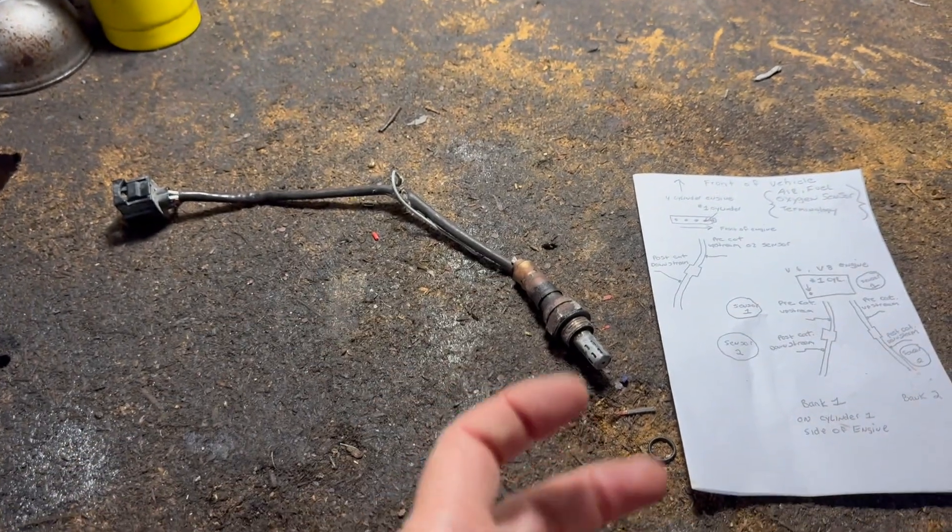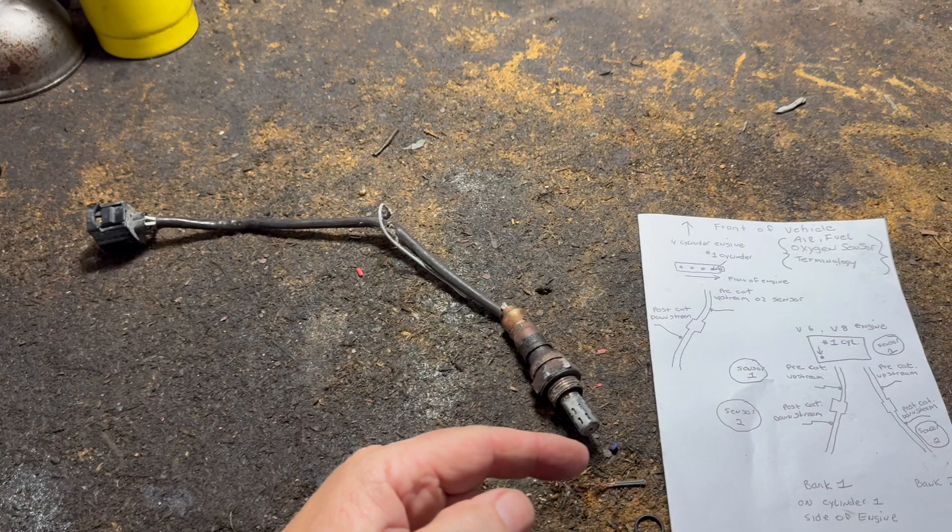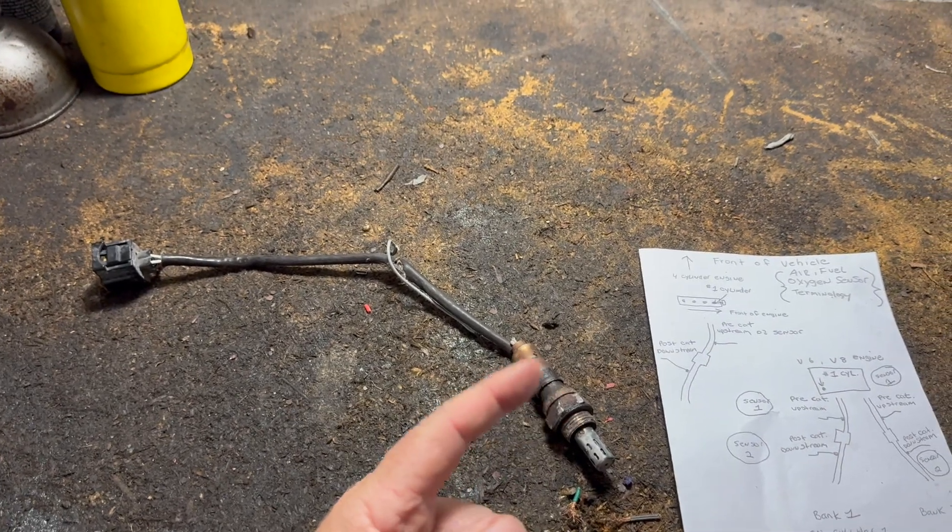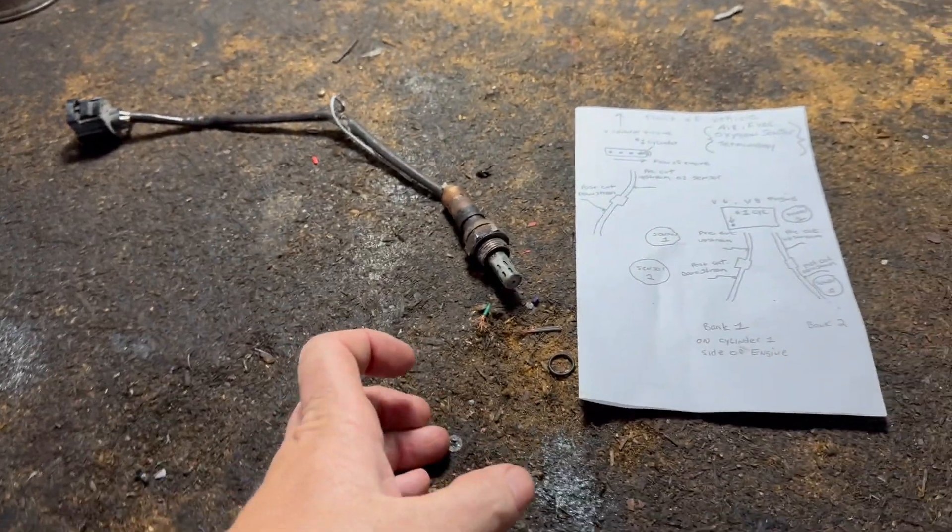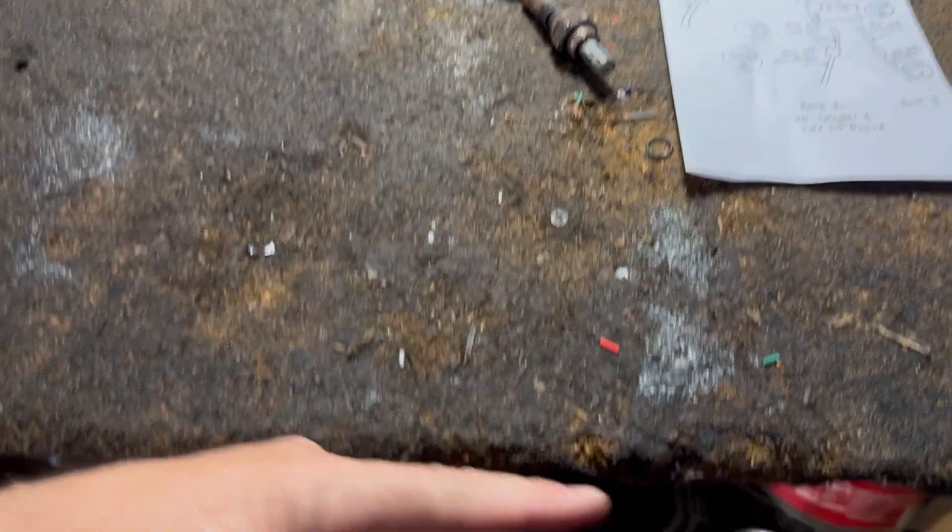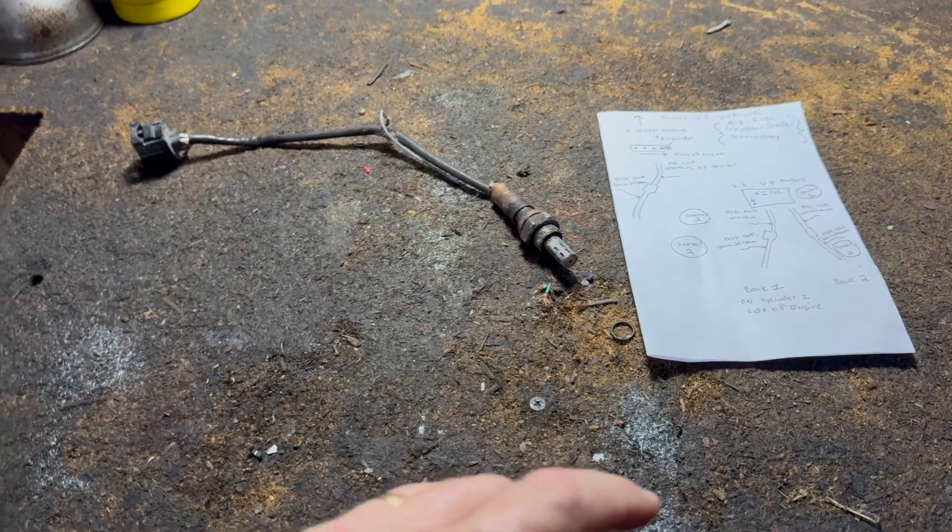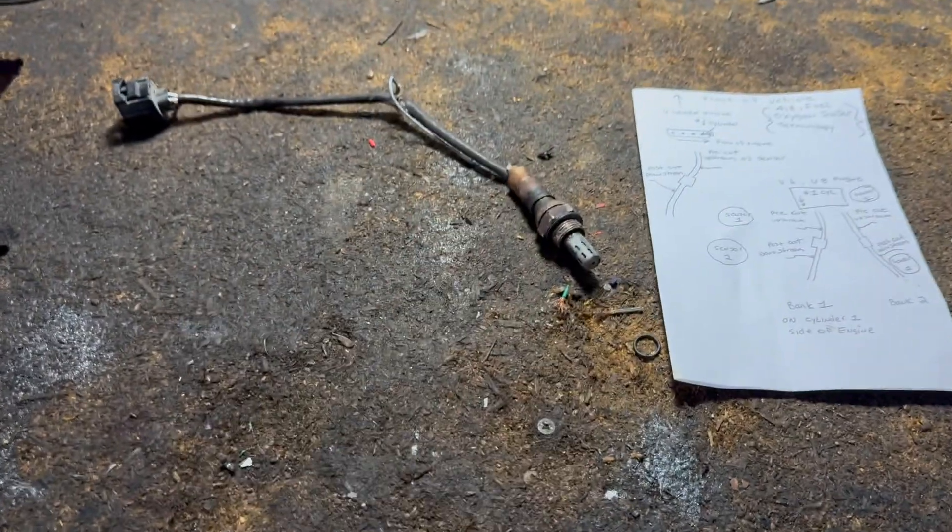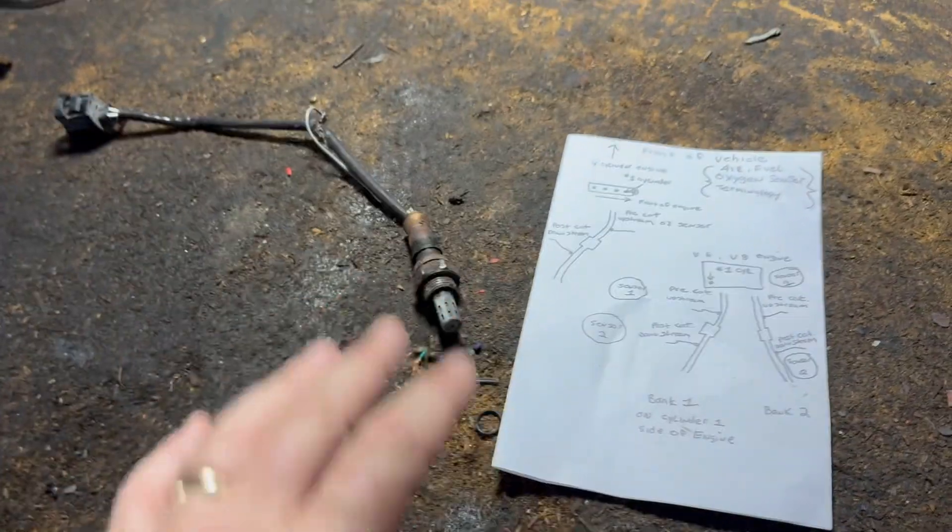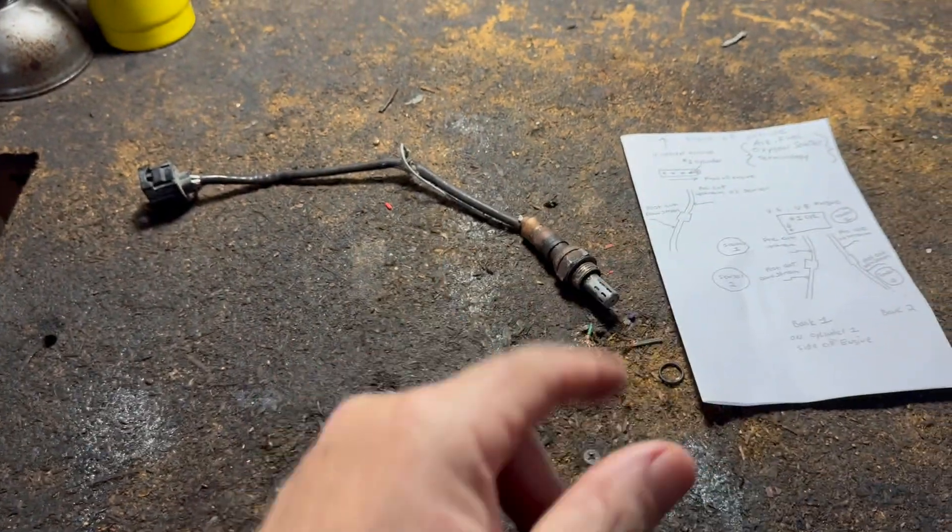But before it goes into that catalytic converter, there's an O2 sensor that sniffs it and says okay, it's a little rich. So now it goes in the catalytic converter and then there'll be another sensor on the bottom that sniffs it again and goes okay, we made the good correction. Let's leave it like that. So when any of these things mess up the computer doesn't like it, it's going to throw a code. It may say O2 sensor bank one.